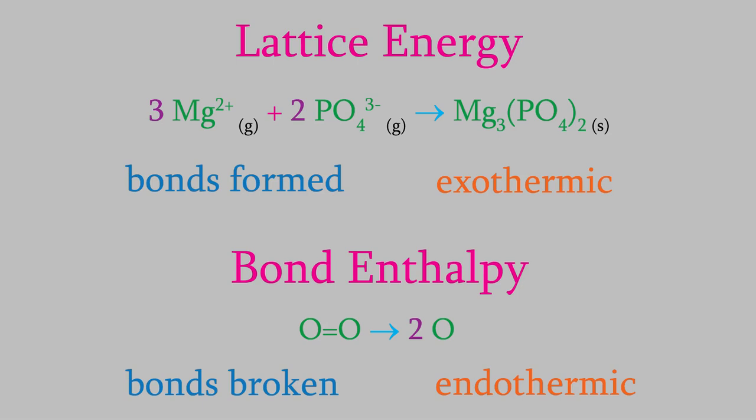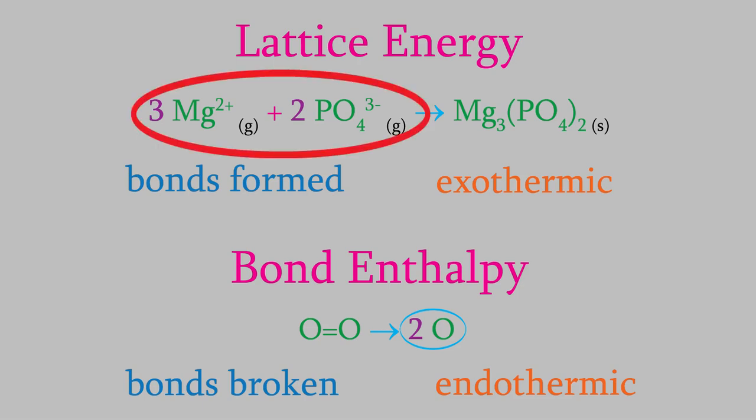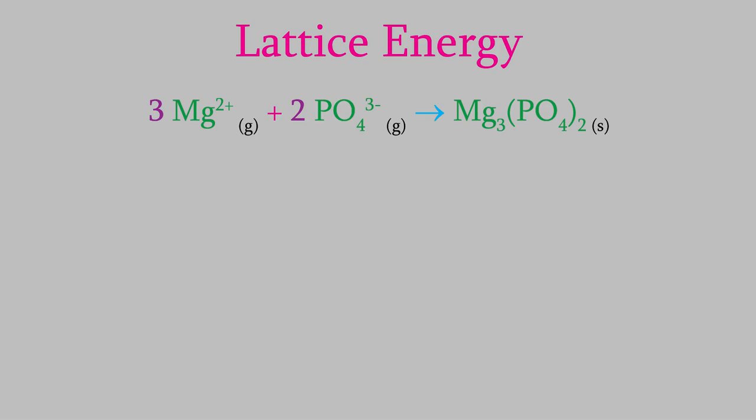Also, notice that the reaction reflecting the bond enthalpy results in two neutral atoms, whereas the lattice energy reaction involves ions, not neutral atoms. That's because bond enthalpies involve covalent bonds in which the electrons are shared, so each atom gets some of the electrons and the result is two neutral atoms. The lattice energy always involves ionic bonds, so the bond results by combining an anion and a cation. Finally, notice that the reaction represented by the lattice energy would actually be very difficult to achieve in a lab. We'd need gas phase ions of magnesium and phosphate, which would be extremely reactive and require very high temperatures and low pressures to create.